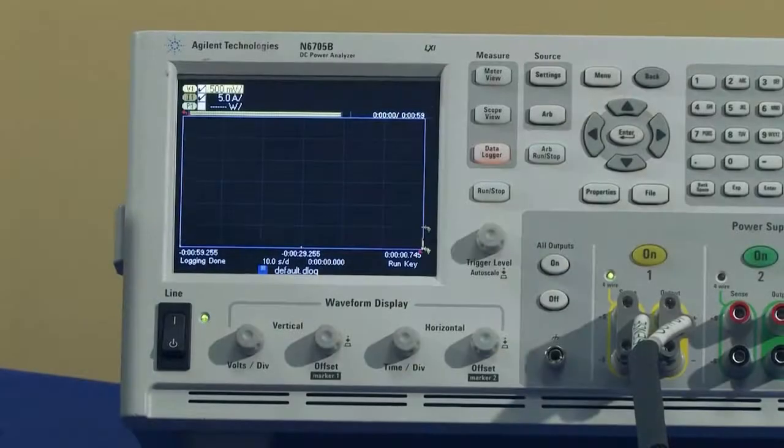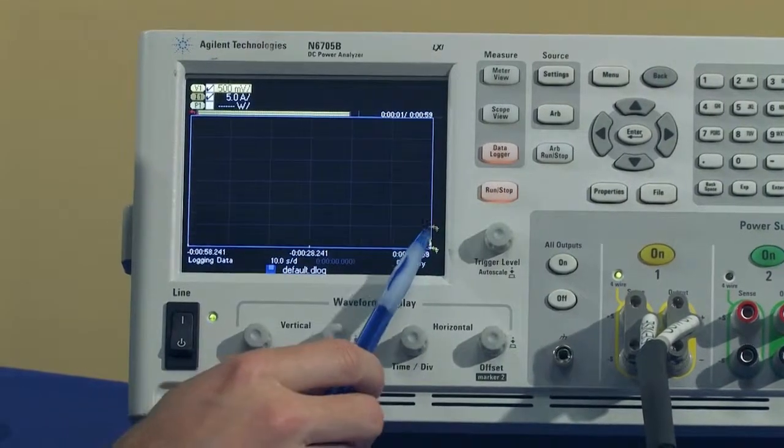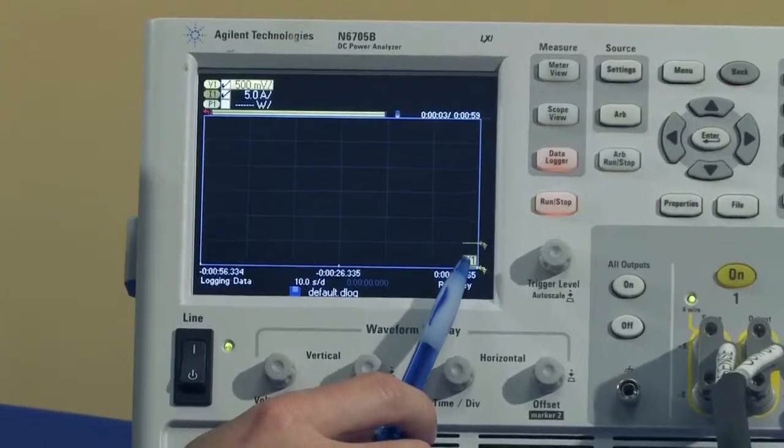So I'll start the data logger now by pressing the run stop key. At the bottom we'll see the voltage and the current are being measured.